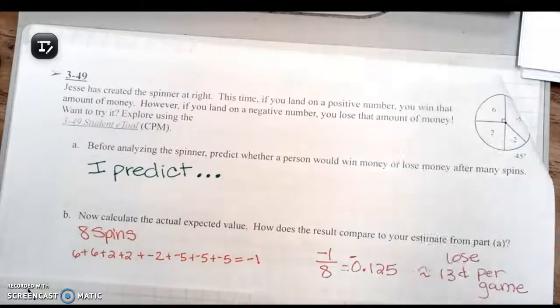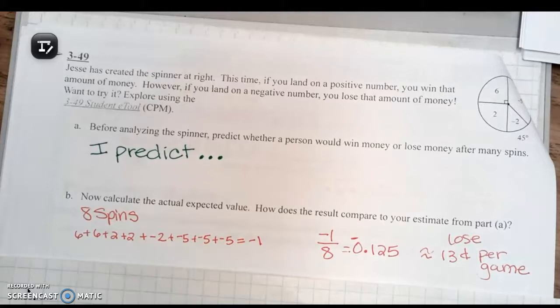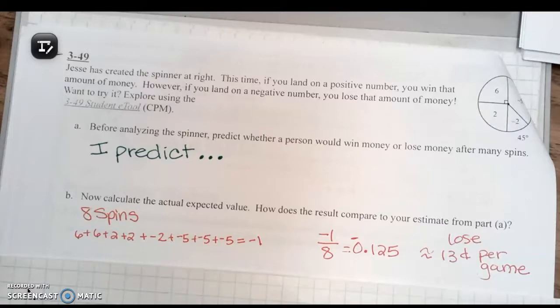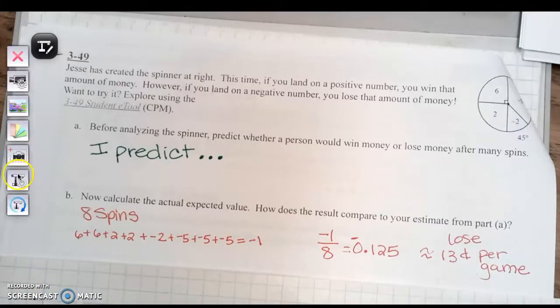Flip over to page 14. At the top we have question 49: Jesse has created a spinner. If you land on a positive number you win that amount of money; if you land on a negative number you lose that amount. For part A, before analyzing the spinner, predict whether a person would win money or lose money after many spins.